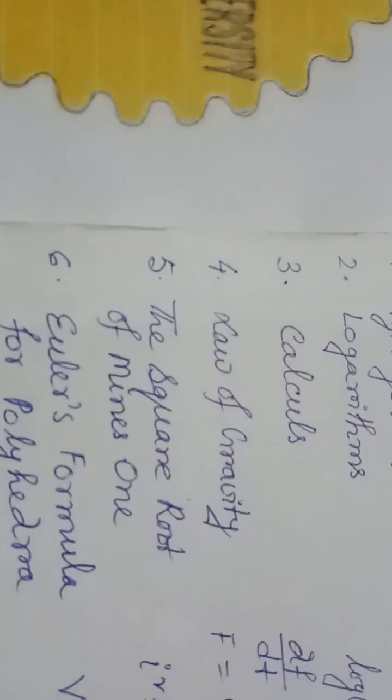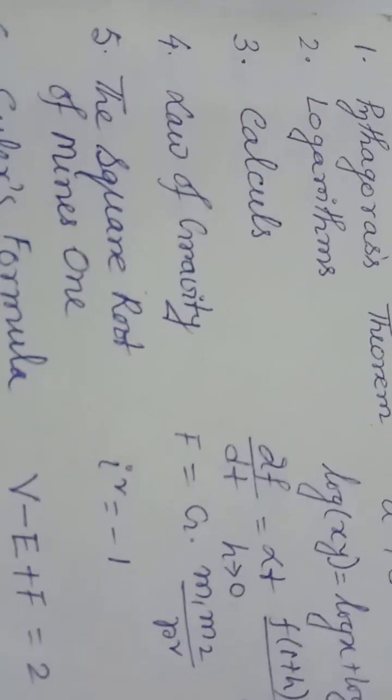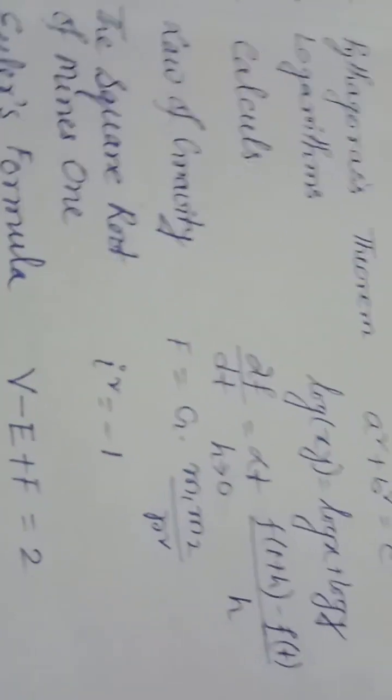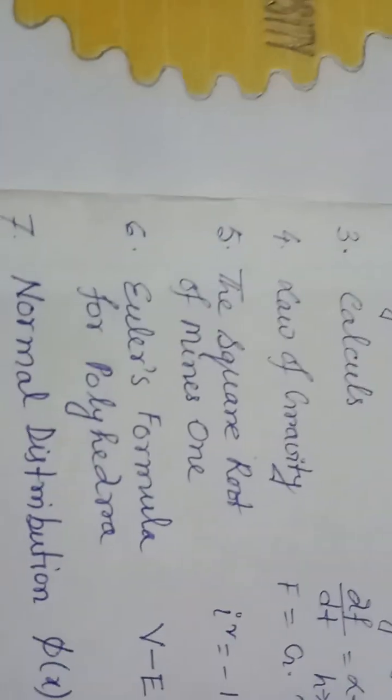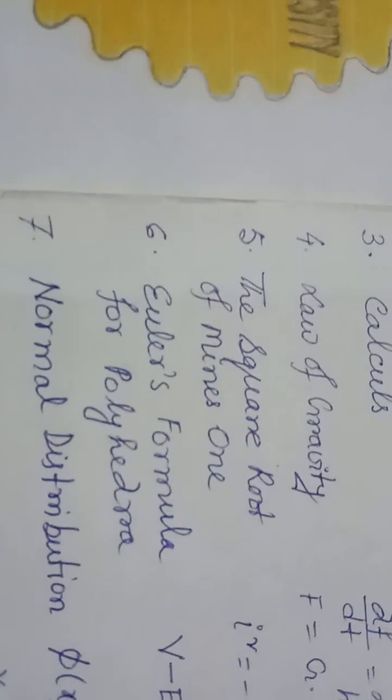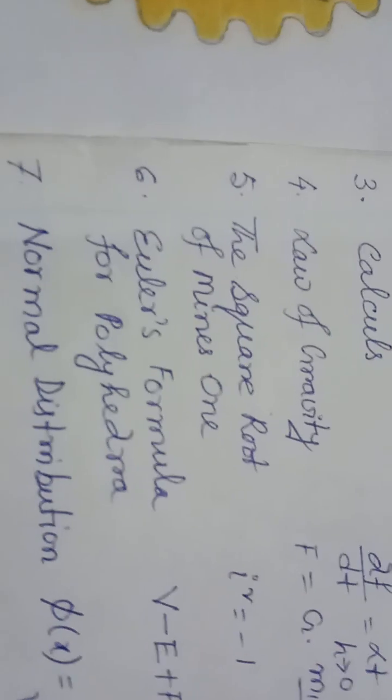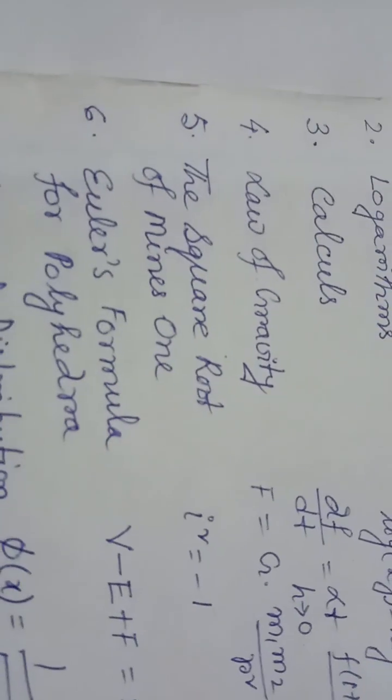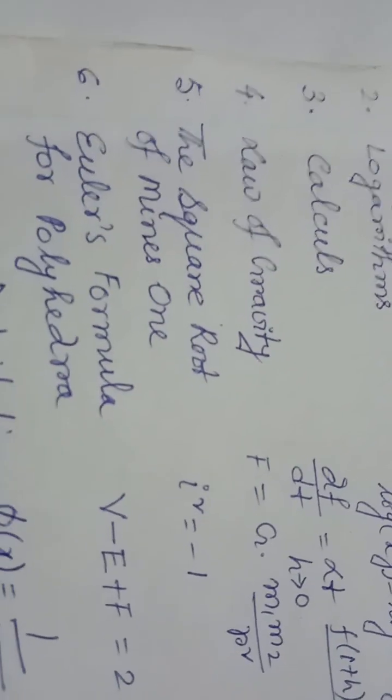Second formula is logarithm: log(xy) = log(x) + log(y). John Napier, scientist, 1610. Then formula number 3, calculus: df/dt = lim(h→0) [f(t+h) - f(t)]/h. Newton, 1687.